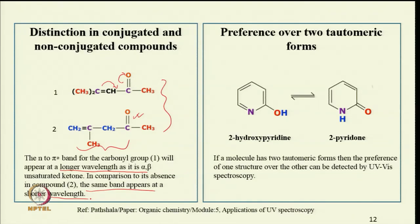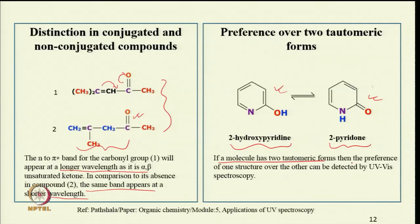We can also use UV visible spectroscopy to identify which tautomeric form is present. For example, between 2-hydroxypyridine and 2-pyridone, these two tautomeric forms can be distinguished using UV visible spectroscopy. The preference of one structure over the other can be detected because the lone pair n to pi* transition is in conjugation with the double bond, and just by looking at the n to pi* band we can know which tautomeric form is present in the sample.